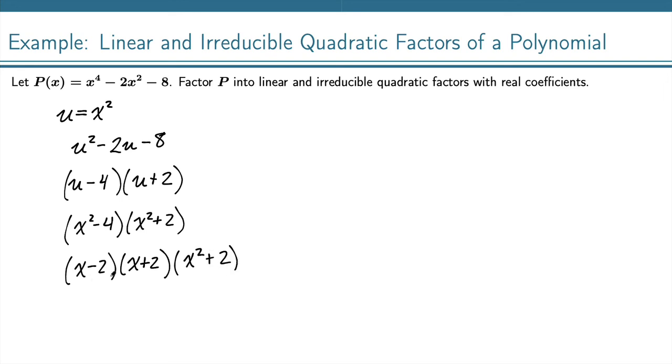And now we've got a linear factor, a linear factor, and an irreducible quadratic factor. And that is our factored form using only linear and irreducible quadratic. So we've got it.